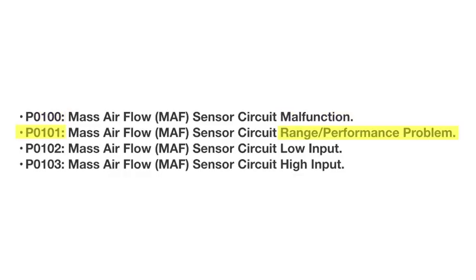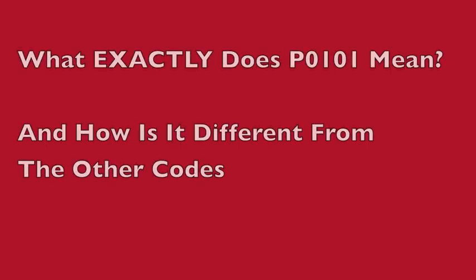The next code is P0101, which is a range performance problem. The next one is P0102, which is a low input — possibly a short to ground. The next one is P0103, a high input — possibly a short to some other power source other than the 5-volt reference.